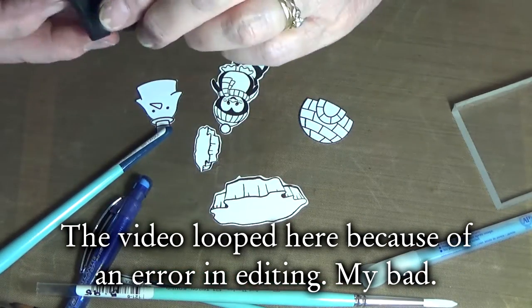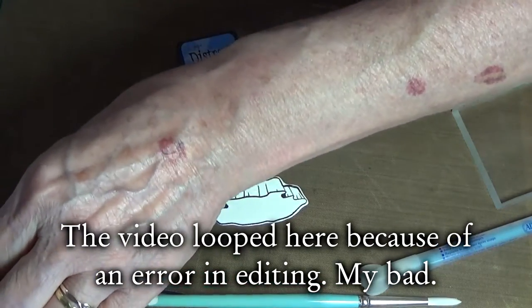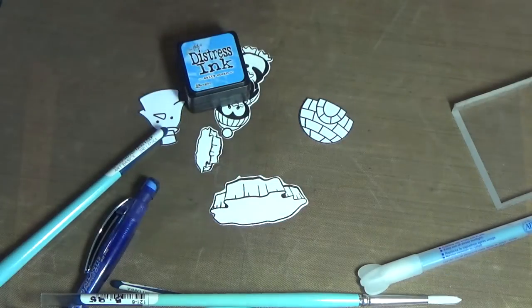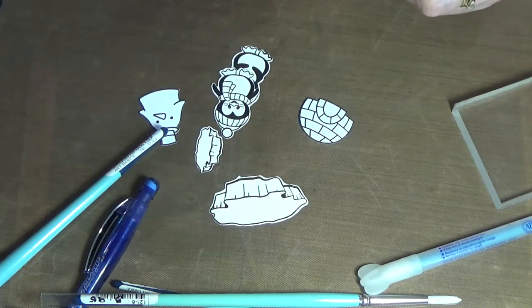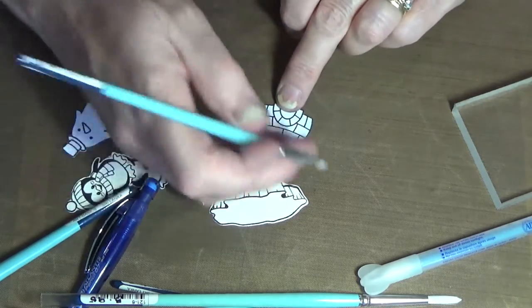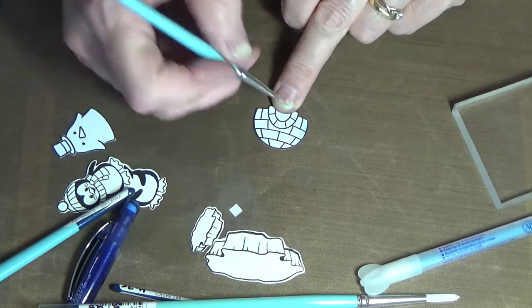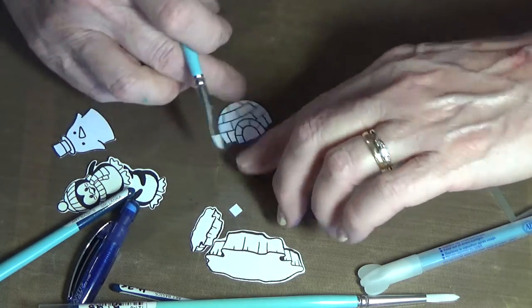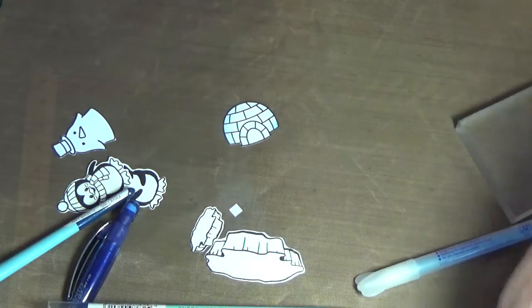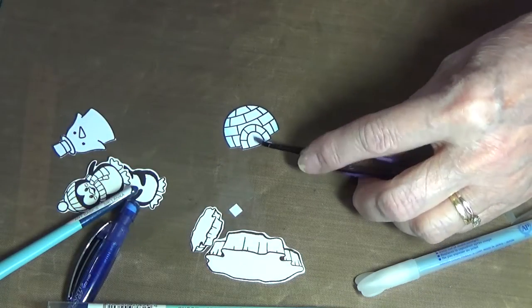Most of the brushes I'm using are Art Basics quarter-inch angle shaders, though sometimes I use a bigger one. The round brushes are usually number two and number four. I have a number six I've used occasionally, but I don't think I've shown that in the video yet.